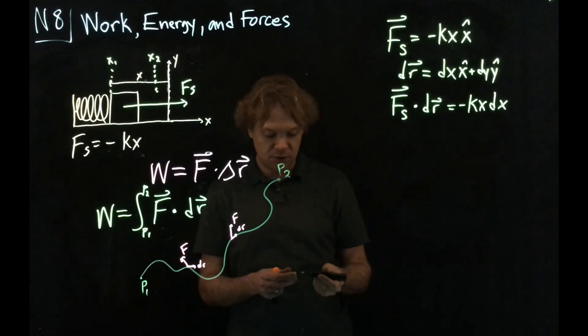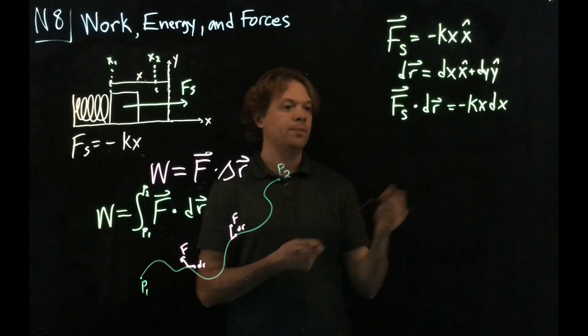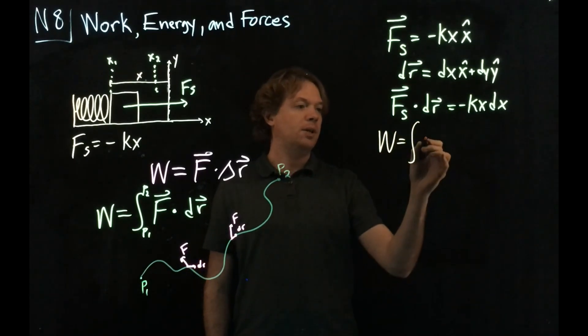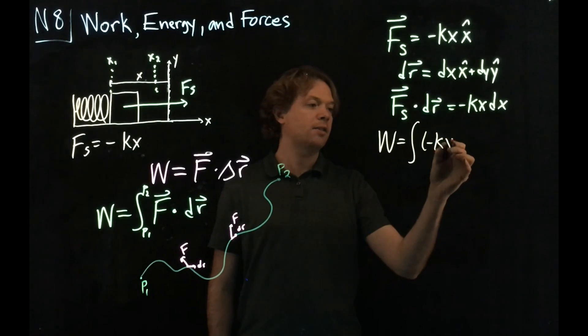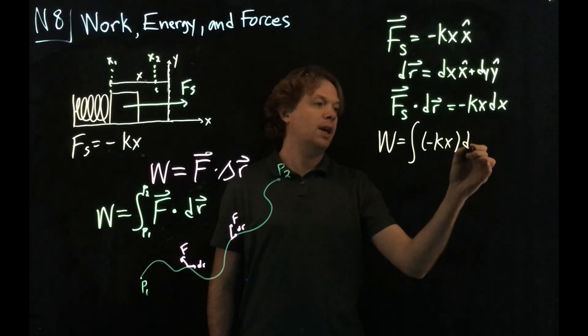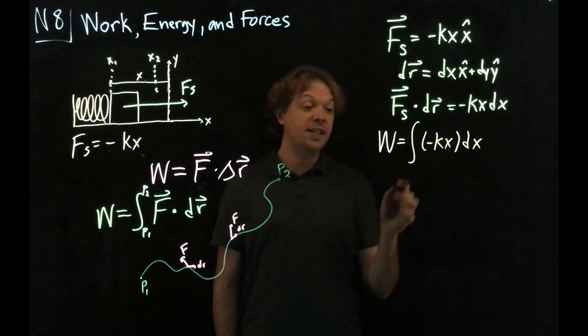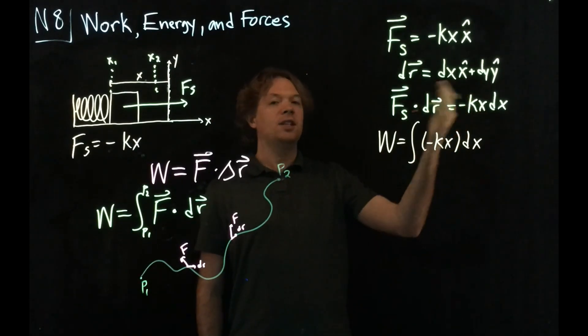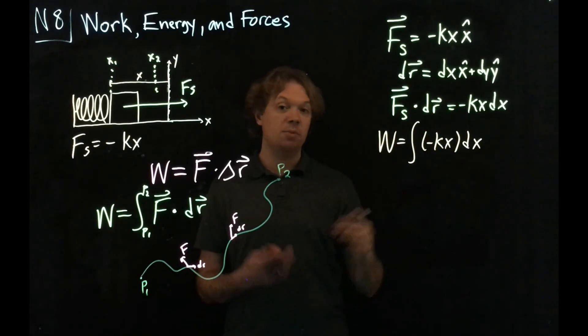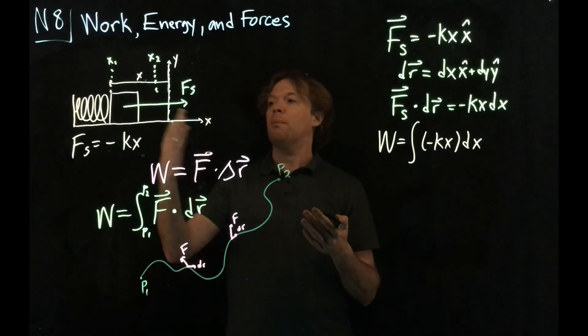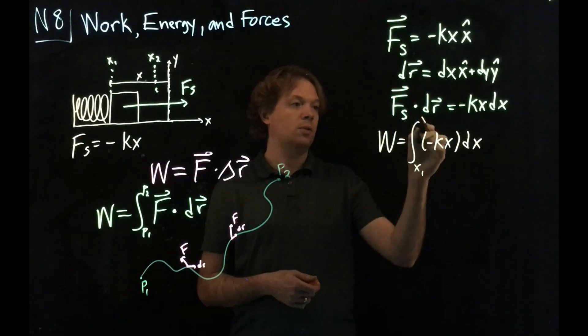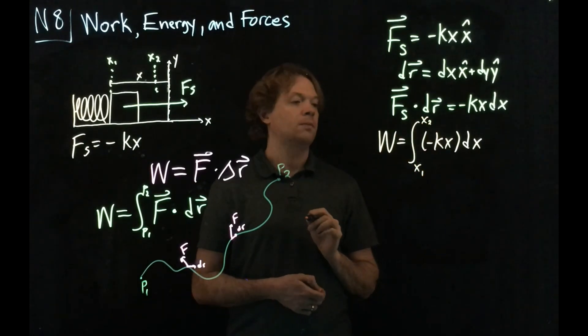Let's plug that into the work formula. That's going to be minus kx times dx. I need to indicate the initial and final positions. Because I wrote it this way, my initial and final positions really should be a two-dimensional problem, but my object is only moving in one dimension, so I can just write from x1 to x2.